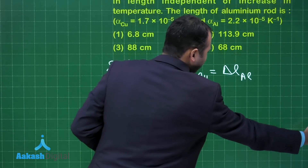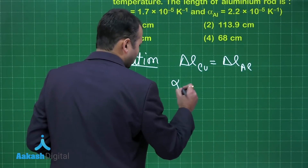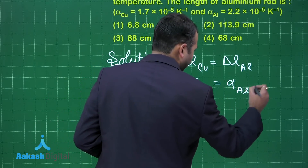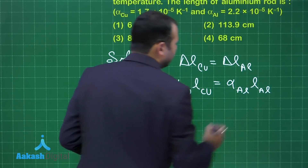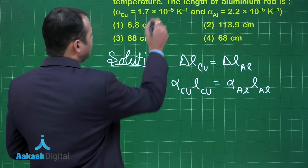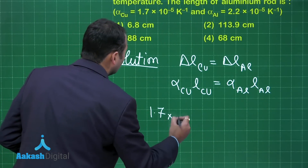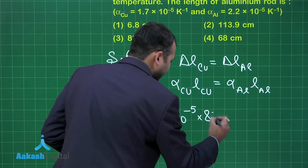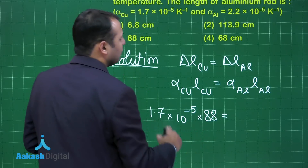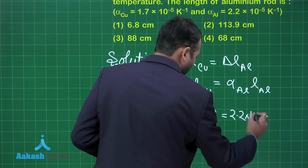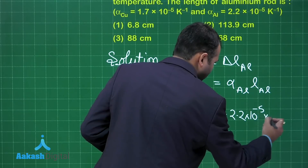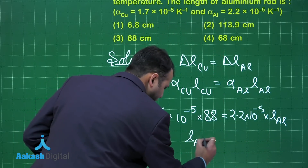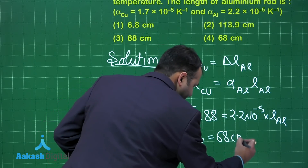The formula for delta L gives us: alpha of copper times length of copper equals alpha of aluminum times length of aluminum. Alpha of copper is 1.7 × 10⁻⁵, length of copper is 88 centimeters, and alpha of aluminum is 2.2 × 10⁻⁵. Solving this gives the length of aluminum equal to 68 centimeters.